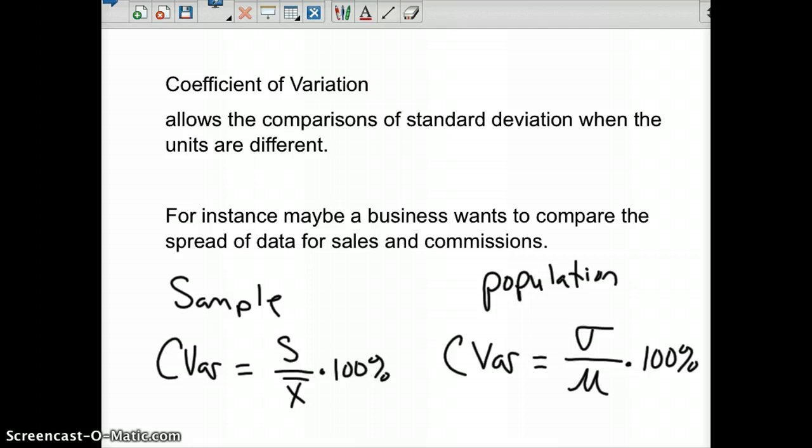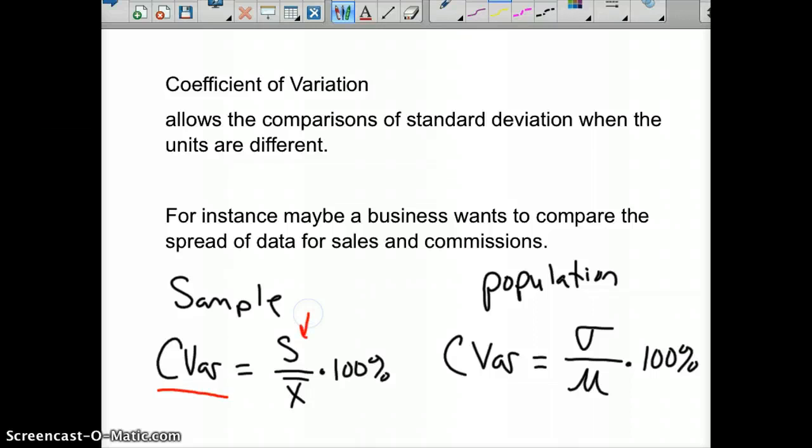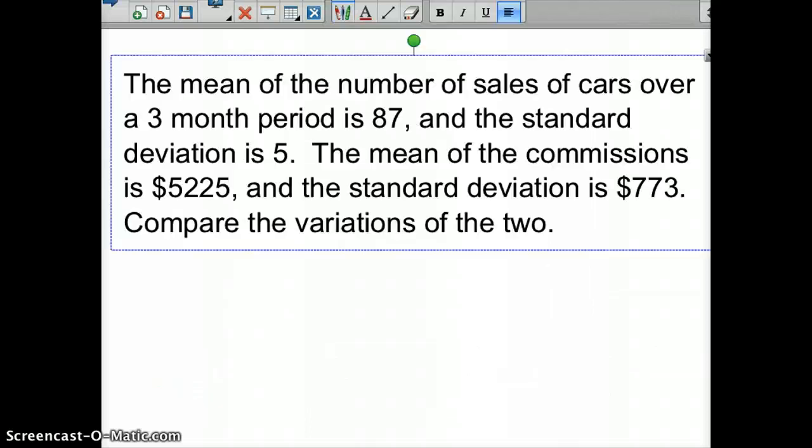But with this coefficient of variation, which we represent here with a C var, it equals - and I have S over X bar for a sample right here because we're dealing with samples. So it's your standard deviation, which is on the top, divided by your mean of your sample times 100%. And then the same with population. So population is your standard deviation for population divided by your mean, or mu, times 100%. So it's not very difficult, but it's kind of a very powerful tool.